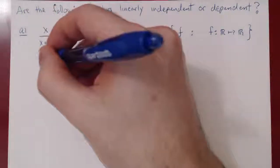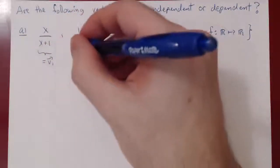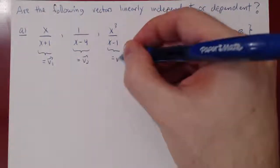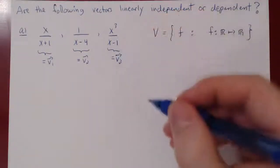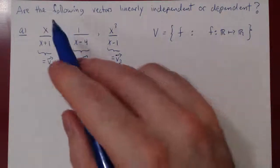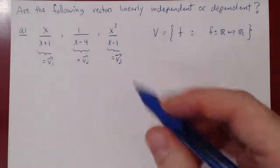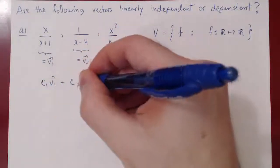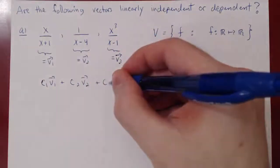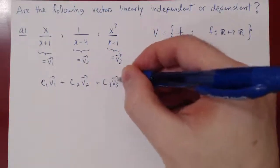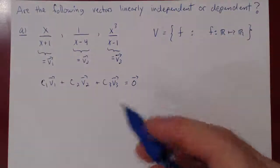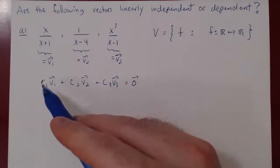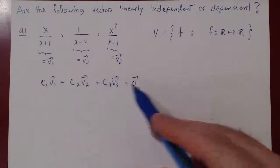We call the first vector v1, then v2, and then v3. When we consider this question, we look at a linear combination of our three vectors giving the zero vector of the vector space. If we set c1, c2, and c3 to all be zero, we get the zero vector.